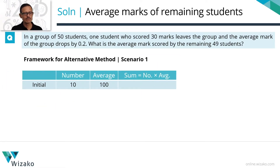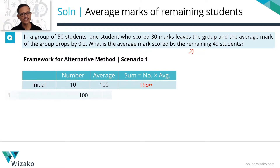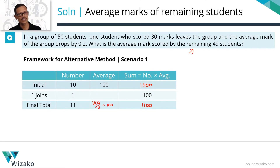Let's move on to the second alternative method. I'm going to walk you through three scenarios to build the framework, and then solve the same question using the alternative method. Let's say we have 10 people who initially have $100 each, so the sum is $1,000. Now one person joins the group bringing $100. The new total is 11 people with $1,100, giving an average of $100.